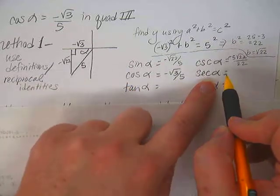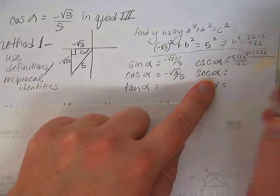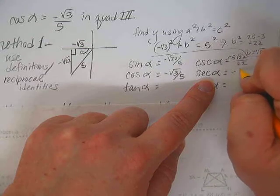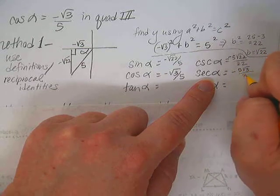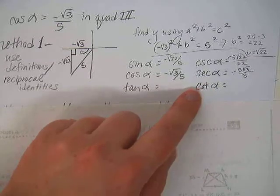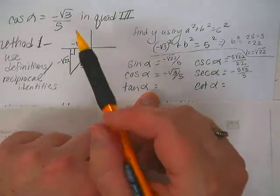And then since cosine is negative square root of 3 over 5, let's go ahead and use the reciprocal identity to flip that over. So negative 5 square root of 3 over 3 should be the secant.